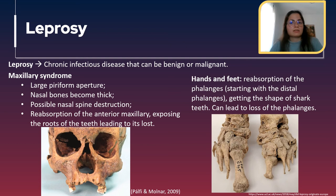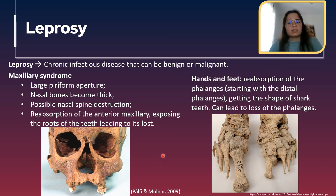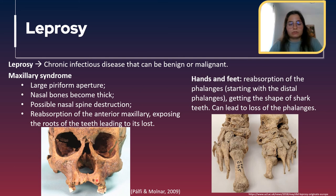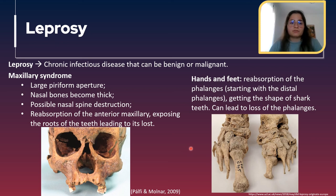The last infectious disease is leprosy, a chronic infectious disease that can be either benign or malignant. It can affect the bones of the face, hands, and feet. In the face there is a maxillary syndrome characterized by a large piriform aperture, as you can see here. The nasal bones become thick, sometimes there is destruction of the nasal spine, and finally reabsorption of the anterior maxillary exposing the roots of the teeth and leading to their loss. You can see here the alveolar margin is higher in this zone, and this area has been remodeled indicating antemortem tooth loss. In the hands and feet, reabsorption of the phalanges can result in phalanges shaped like shark teeth, as you can see in all these phalanges in this foot.